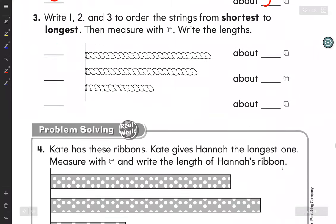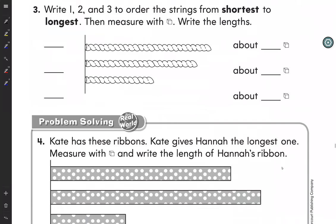Now we can write 1, 2 and 3 to order the string from shortest to longest. Then measure with the ones. Write the length. Let me add it. 1, 2, and then 3. So it can count 1, 2, 3, 4.